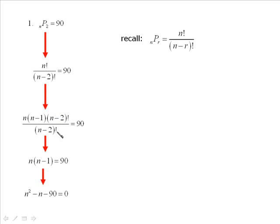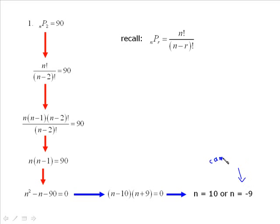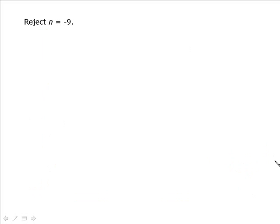n squared minus n minus 90 equals 0. Factoring gives (n minus 10)(n plus 9), so n equals 10 or n equals negative 9. When using factorials or permutation notation, you cannot have a negative number. So we reject n equals negative 9, and our answer is n equals 10.